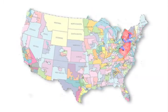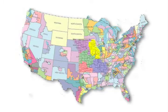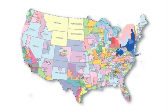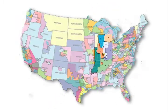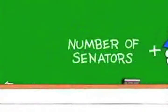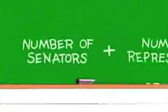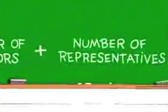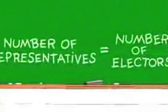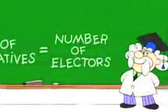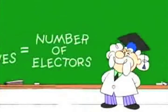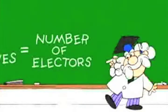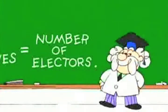What happens is each state divides population size into congressional districts. The way votes are counted is by taking the amount of congressional districts in your state and adding one more vote for each senator in your state, which is two. These votes are known as electoral votes.